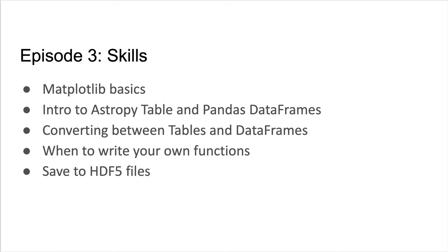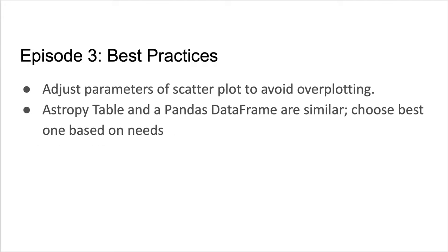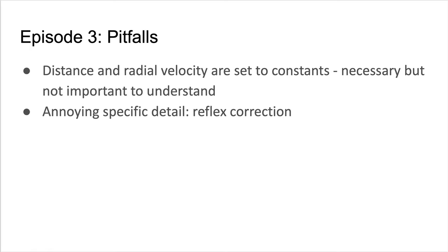Finally, this episode introduces the HDF5 file structure, again saving our intermediate results for reproducibility. In addition to writing functions and saving results, this episode introduces the best practice of adjusting plotting parameters to avoid overplotting, and that the choice of AstroPy table versus Pandas dataframe is subtle and can vary based on the user's needs. Learners can get hung up on the fact that we add a distance and radial velocity keyword to our coordinates — these are set to constants to avoid messing up future calculations. More details are given in the instructor guide.